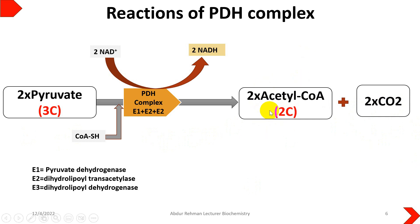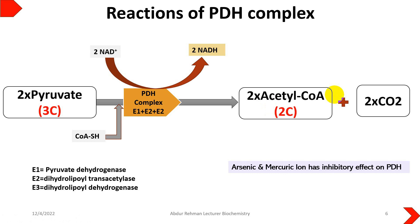The two acetyl-CoA molecules formed are now ready to enter the mitochondria, where they proceed into the Krebs cycle, and further ATP will be produced from this acetyl-CoA.